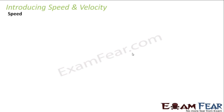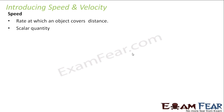Let us first talk about speed. What is speed? It is the rate at which an object covers distance. Speed is a scalar quantity, meaning only magnitude is needed to define it. If a boy runs at a speed of 2 kilometers per hour, we do not need to mention any direction — just the magnitude is enough to describe speed. Speed tells us how fast or how slow an object moves.